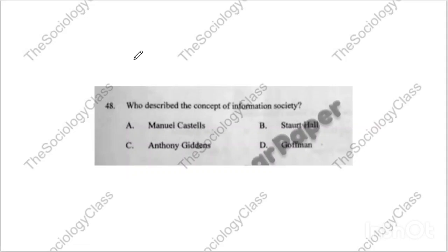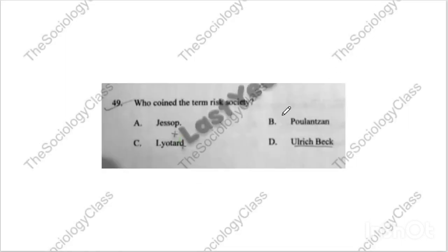Question number forty-eight: 'Who gave the concept of information society?' Options: Manuel Castells, Stuart Hall, Anthony Giddens, or Goffman? The correct answer is A — Manuel Castells. Please remember their books too. Question forty-nine: 'Who coined the term risk society?' I discussed this in previous question papers. The correct answer is D — Ulrich Beck.